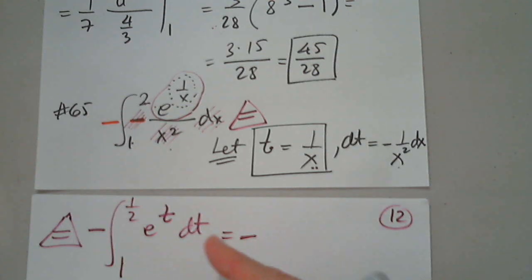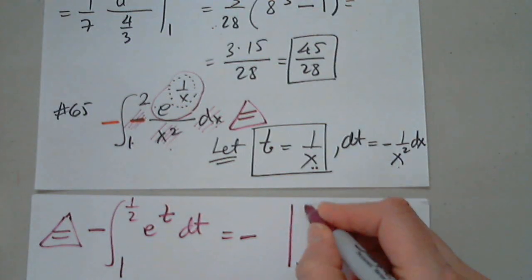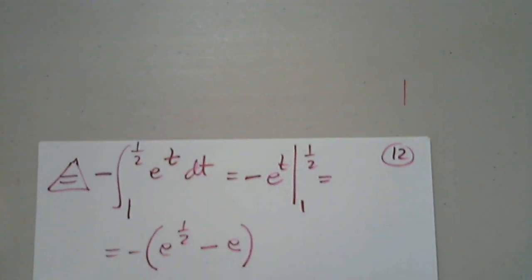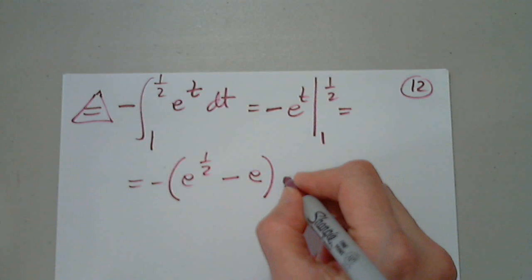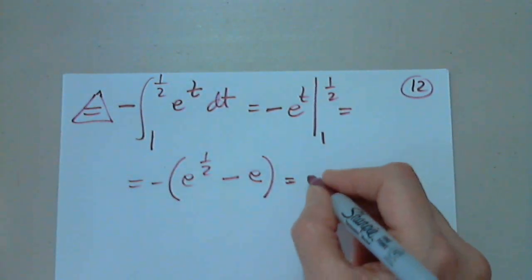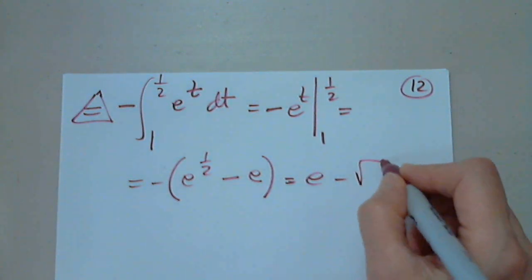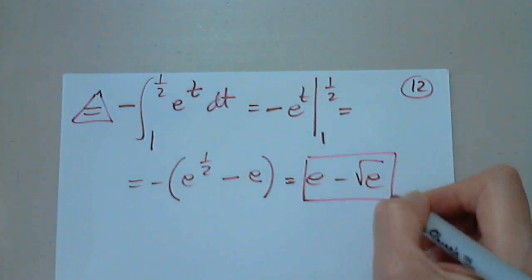Negative. What function prime is e to t? e to t. e to t. Awesome. So this is negative e to 1 half minus e to the first. Yes, you can distribute that negative because there are too many negatives in here and just reverse. e minus, if you want to write this as the square root of e, it's fine too. This is it.